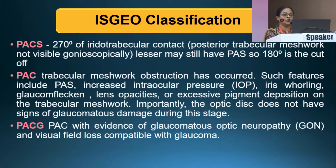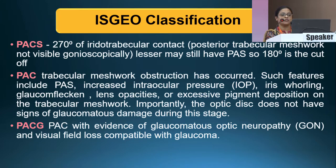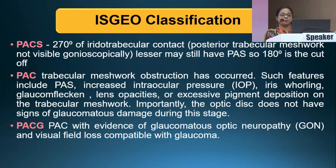According to ISGO classification, primary angle closure disease is divided into primary angle closure suspect, primary angle closure, and primary angle closure glaucoma. In primary angle closure suspect, previously the criterion was 270 degree iridotrabecular contact, but now the cutoff has been revised to 180 degrees. Primary angle closure involves total trabecular meshwork obstruction with features like increased IOP, glaucoma flecken, lens opacities, and excess pigmentation — but no optic disc damage. Primary angle closure glaucoma adds glaucomatous optic neuropathy corroborated with visual field changes.